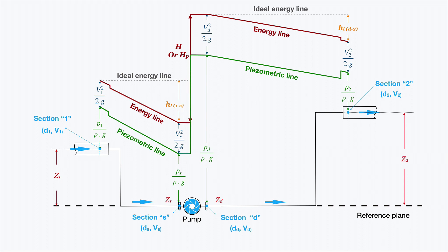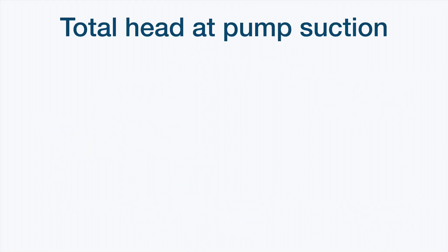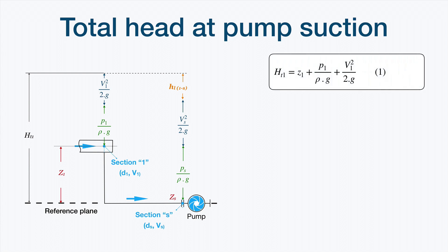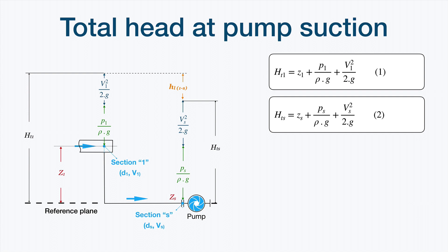The same happens with the piezometric line, joining the gap between the two points with a red line. Let's divide this graphic into two parts. First, we will see the total head at the pump suction section and the equations to determine the pump head there. The total head is equal to the sum of the geodetic head Z1, plus the pressure head P1, plus the kinetic energy — this is equation 1. At section S, we have the height Zs over the reference plane, the pressure head, and the velocity head.